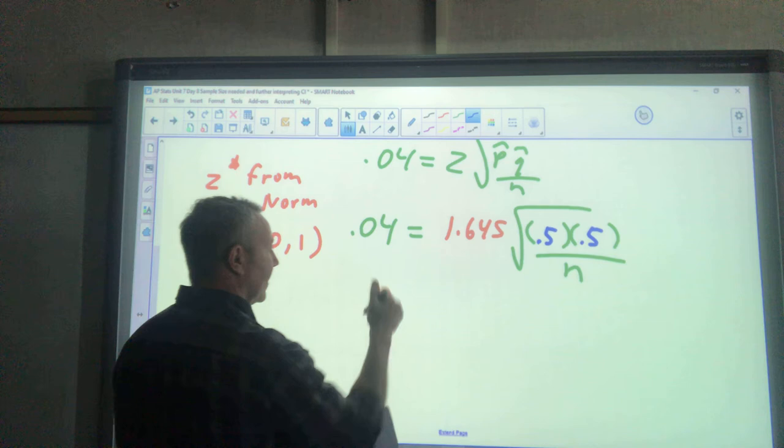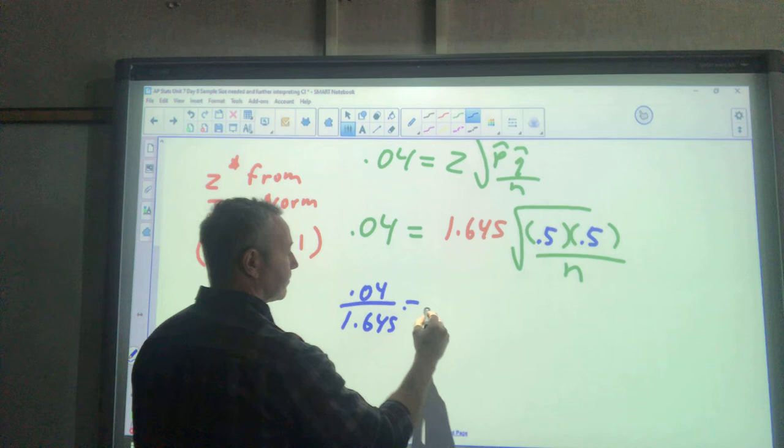Same steps—I'm going to divide by this: 0.04 divided by 1.645.